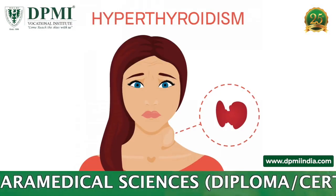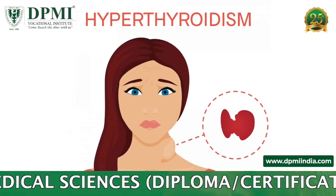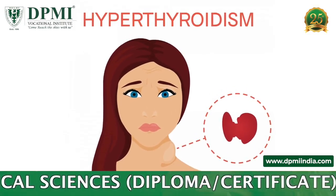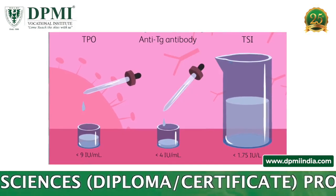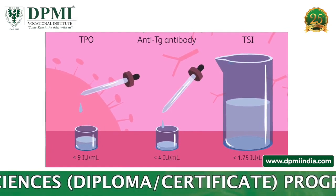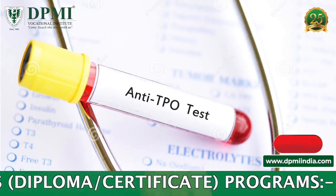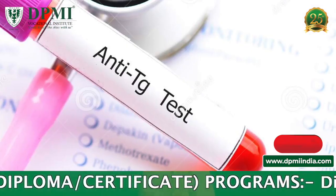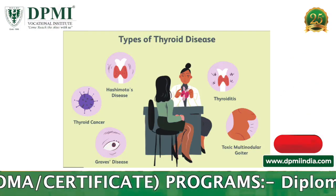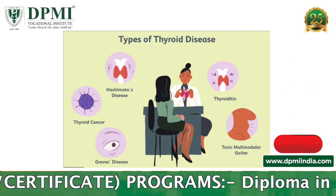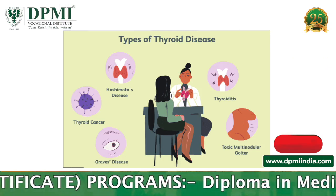T3 test: T3 tests are often used to diagnose hyperthyroidism or to determine the severity of the hyperthyroidism. Thyroid antibody test: two common thyroid antibodies are thyroid peroxidase antibody and thyroglobulin antibody. Measuring the level of thyroid antibodies may help to diagnose the cause of the thyroid problem.